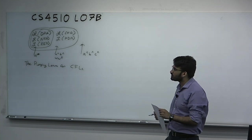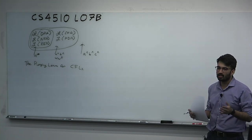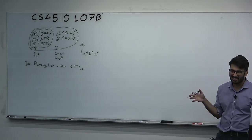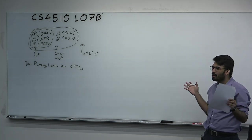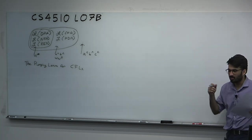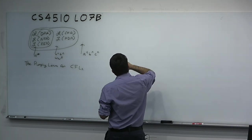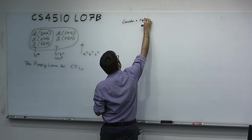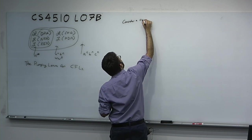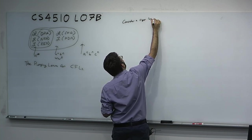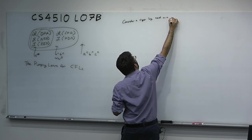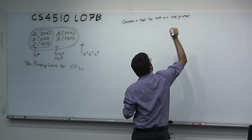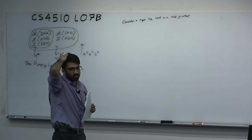Suppose we have an extremely long word and a grammar with not so many non-terminals. For a DFA you measure size by number of states; for a grammar, you can measure the number of productions or non-terminals. Consider a super long word on a small grammar — maybe the word has length a billion and the grammar only has five non-terminals.